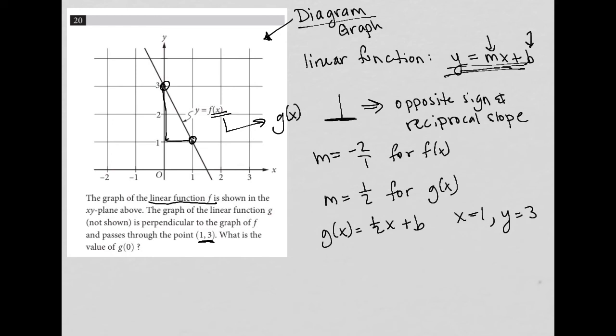So I can replace g of x with 3, because g of x and y are the same thing. Replace x with 1. And what I'm left with here, 3 equals 1 half plus b. What I'm left with after subtracting 1 half from both sides is that b is equal to 2 and a half as a mixed number, but I can write that as 5 halves as an improper fraction.